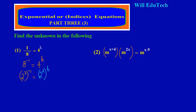By using the power-to-power rule, or the exponent-to-exponent rule, this gives us base 2 with the powers multiplied: 3 times negative 1 gives me negative 3. And on the right side, base 2 with 2 times k gives us 2k.